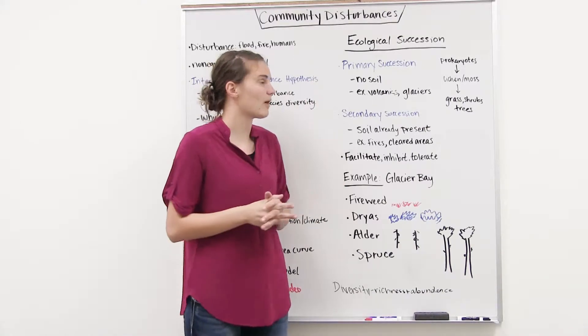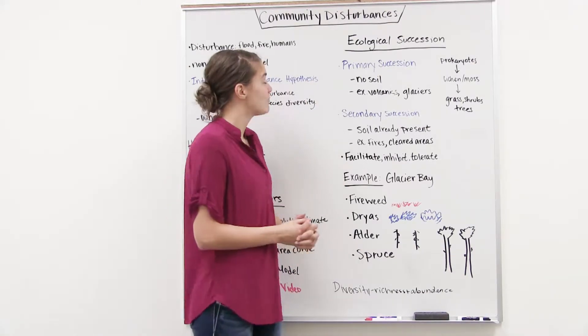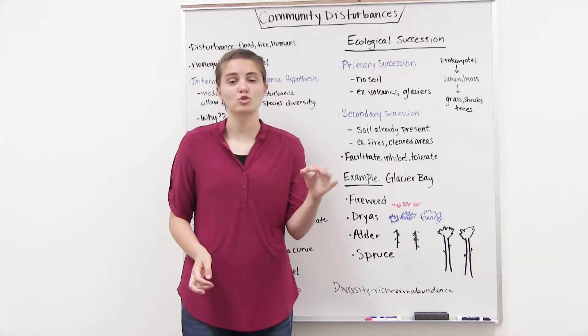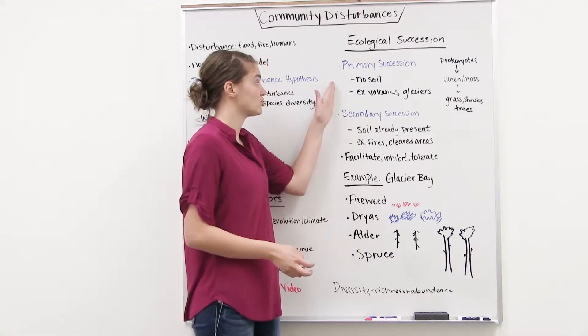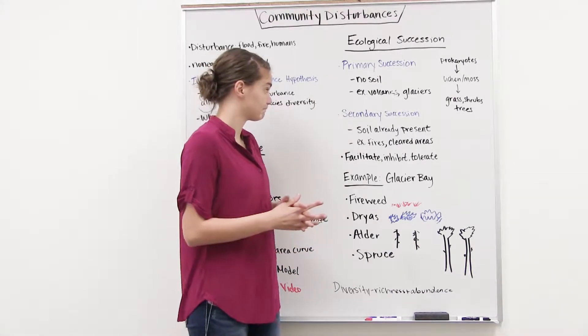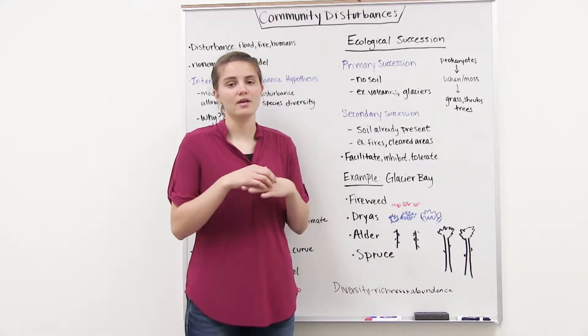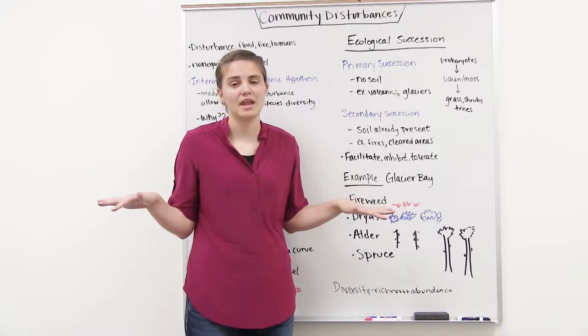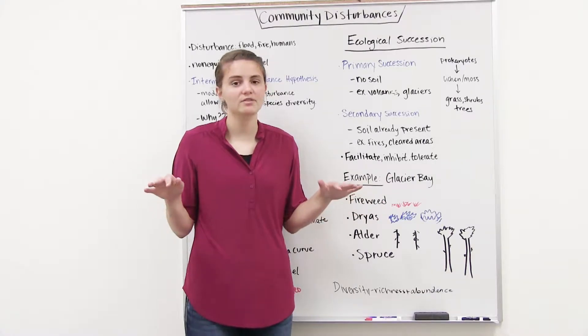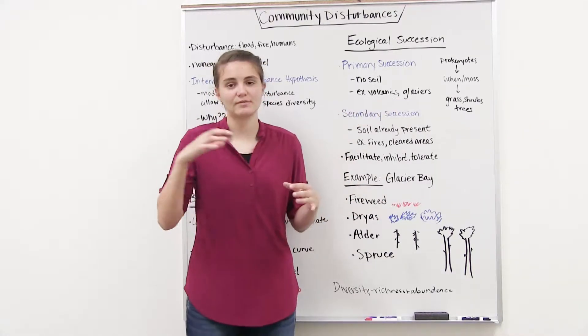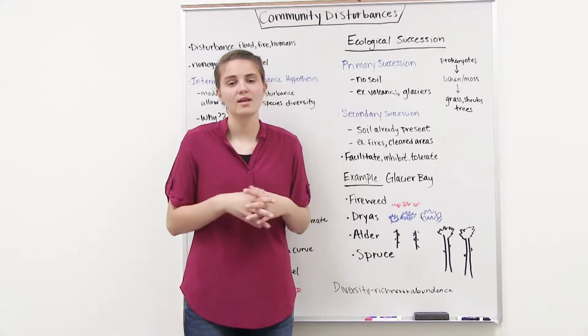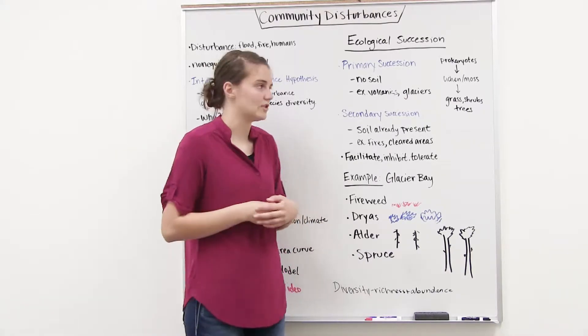So there's two types that we talked about. The first is primary succession, and primary succession happens when we have no soil to begin with. So make sure you know that distinction. And so these are things like volcanoes. The magma can cover an area, and so now we have no soil left. Or we have glaciers that recede, and when they recede, all that's left is rock. And so that's not soil either.